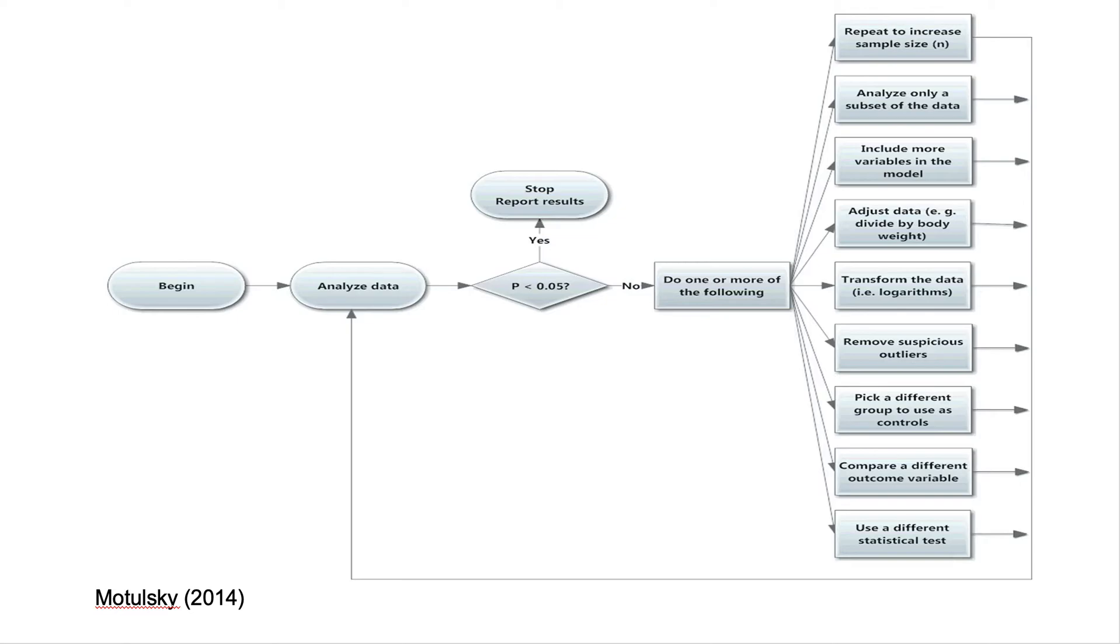Now, for the next way of hacking is analyzing only a subset. For example, if you discover that an outcome is only significant with younger versus older participants. Okay, so the next example is you can include more variables in your model. For example, throwing additional demographic variables into your model. Next, you can adjust the data. The example mentioned is dividing by body weight your variables. Next, you can transform the data. For example, with a log transformation of skewed variables may allow it to be more normally distributed, that specific variable.